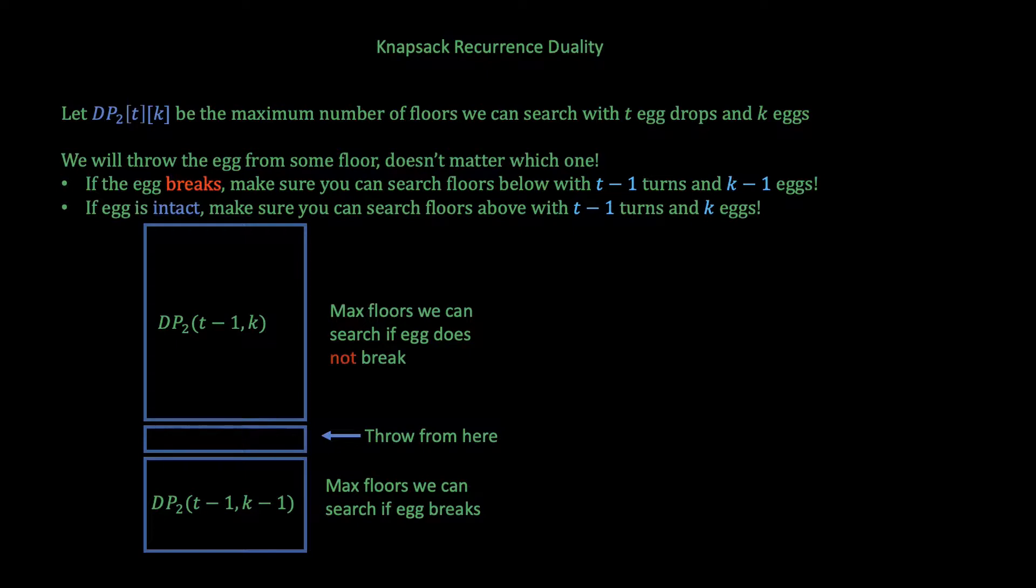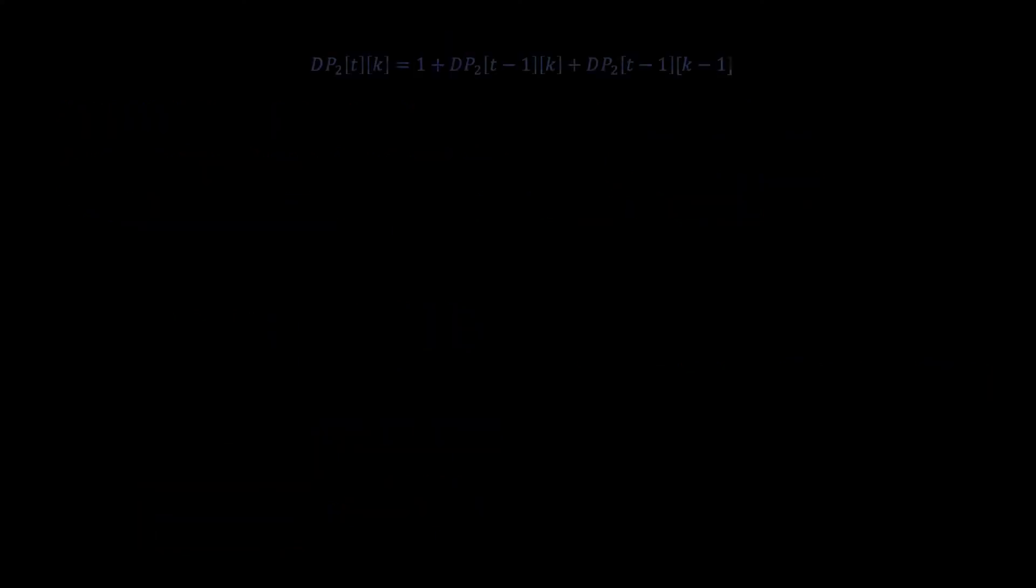Similarly, if the egg doesn't break we need to make sure we can search buildings above where we throw the egg in T-1 turns and using K eggs. The maximum number of those buildings is DP2[T-1][K]. And just like that we have derived a dual recurrence. Simply DP2[T][K] is equal to 1, the floor we threw the egg from, plus DP2[T-1][K-1], the maximum floors below, plus DP2[T-1][K], the maximum floors above. To find the final solution to the problem we're interested in the minimum number of turns T* such that we can search at least N buildings using K eggs.